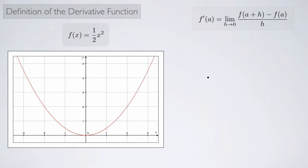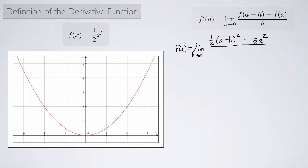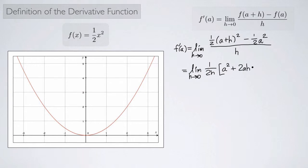So let's actually calculate it using the formula. f prime of a equals the limit as h approaches 0 of f of a plus h minus f of a all over h. f of a plus h is one half of a plus h squared, and f of a is one half a squared, all over h. We can factor out one half, making it one over 2h, with a plus h squared written as a squared plus 2ah plus h squared.